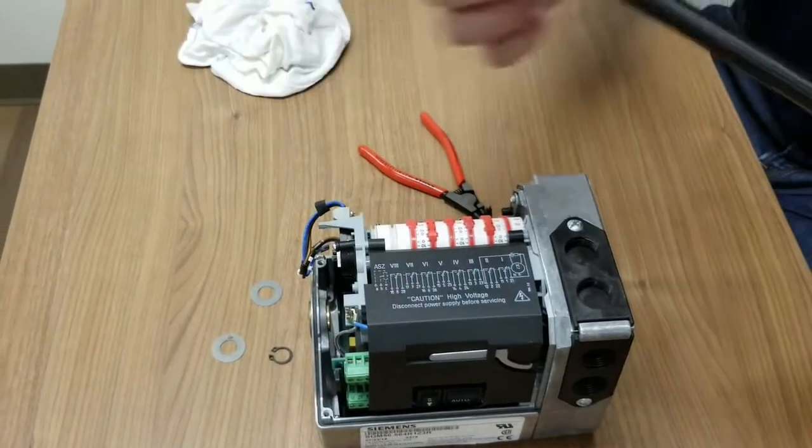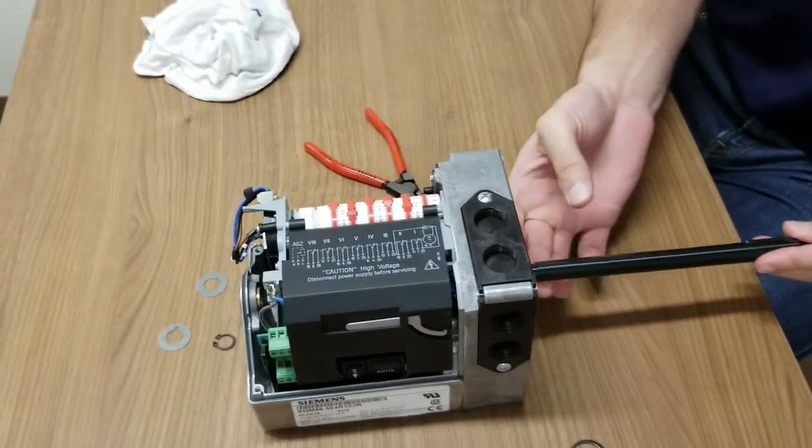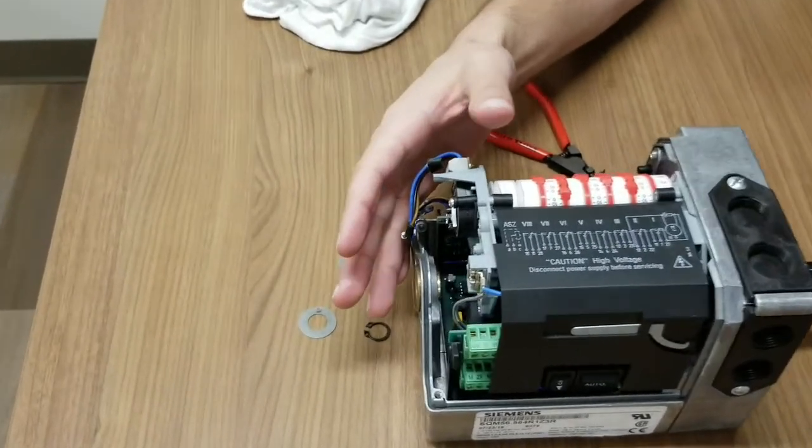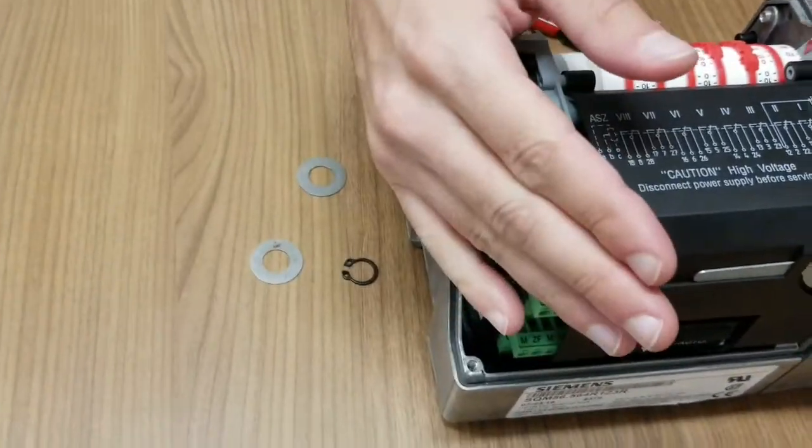So first, we're going to slide the shaft into the actuator. But not all the way, because we want to leave some room to install the first washer.